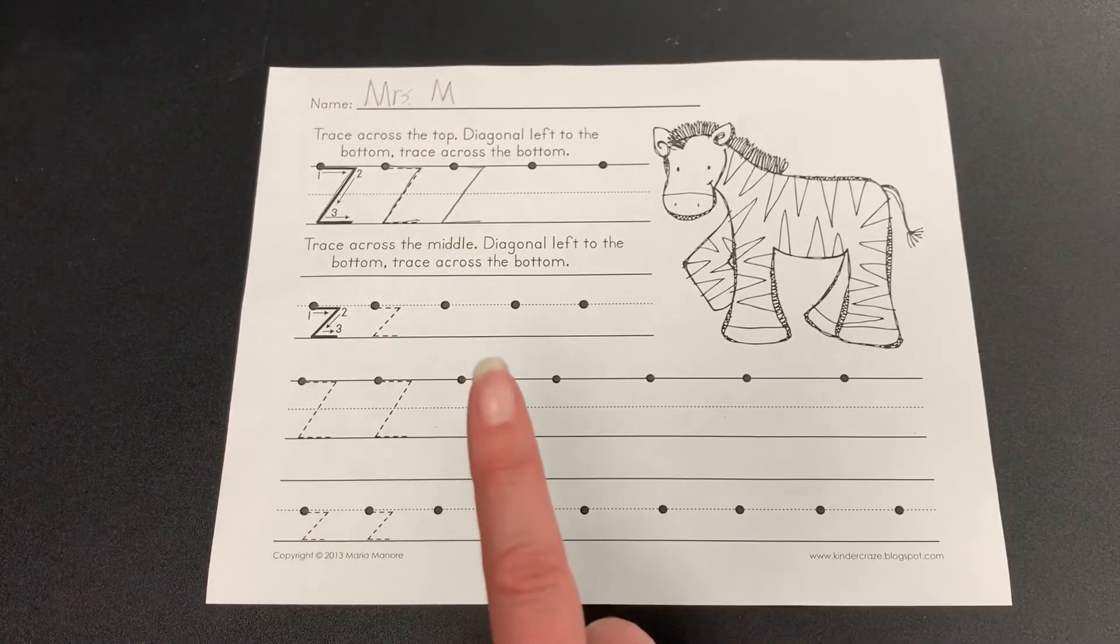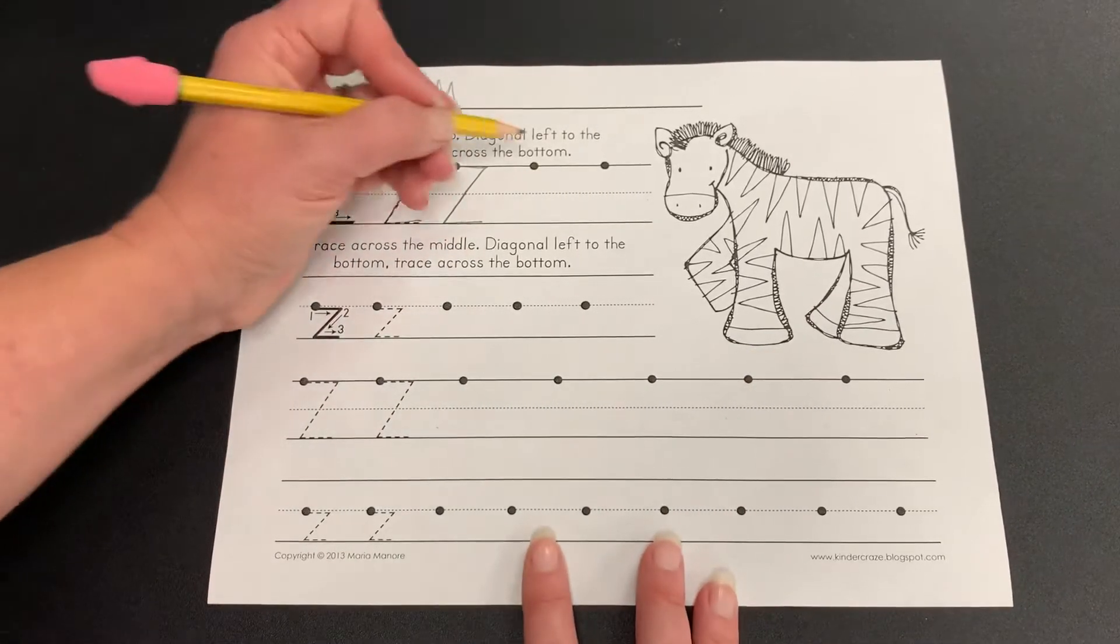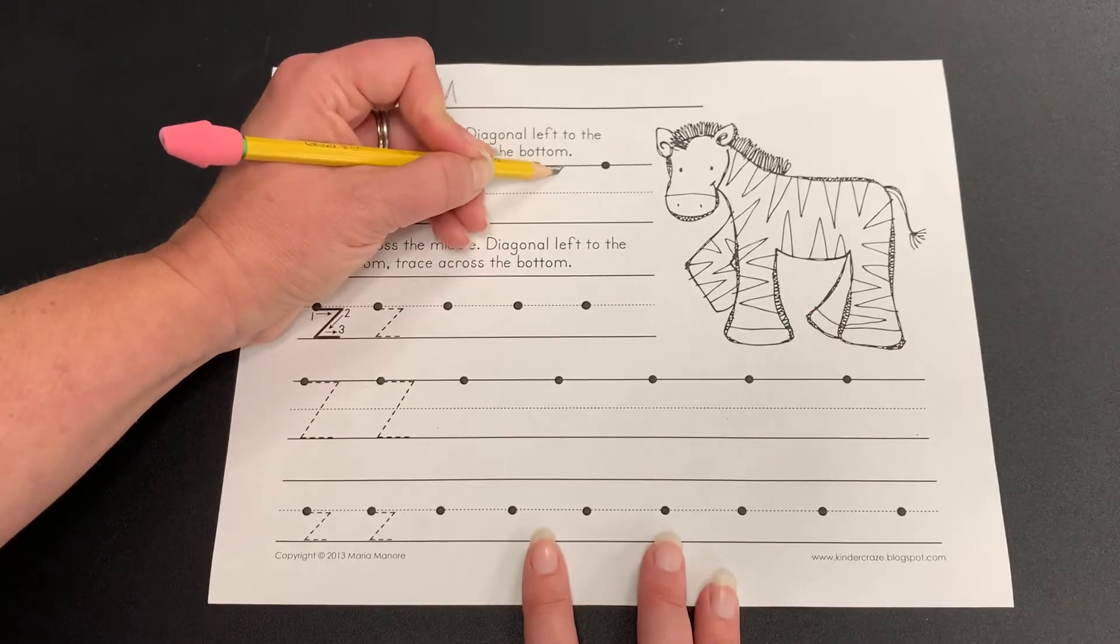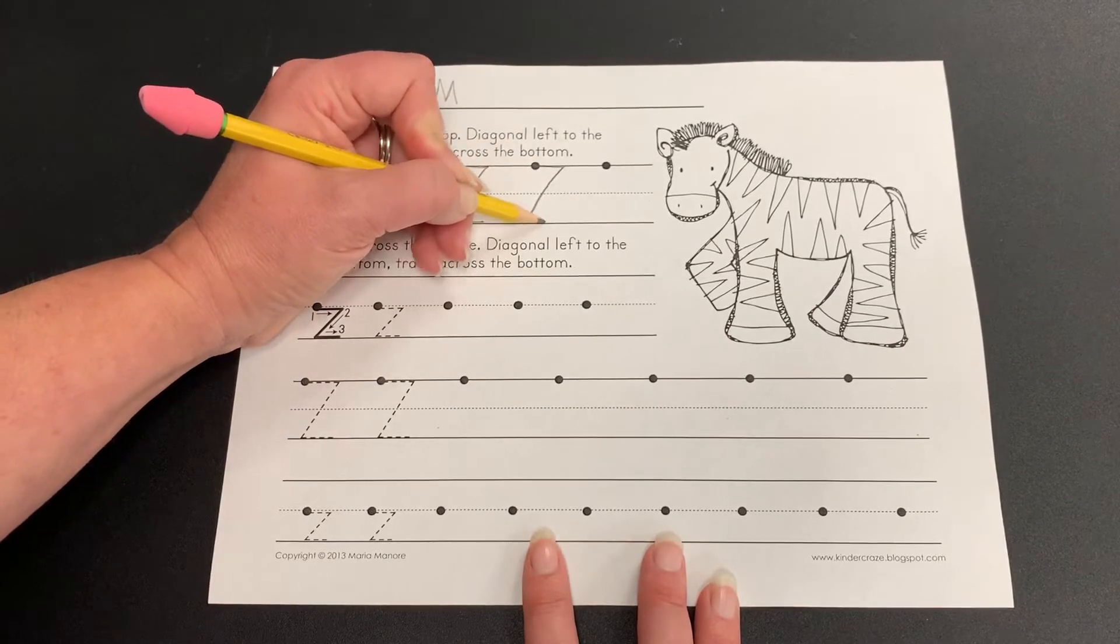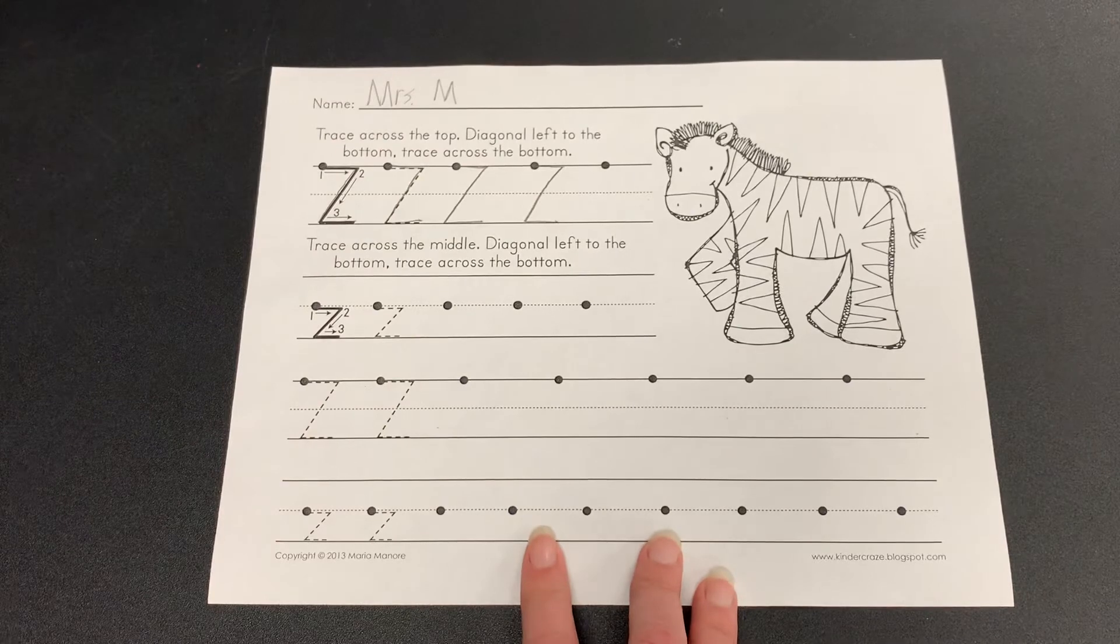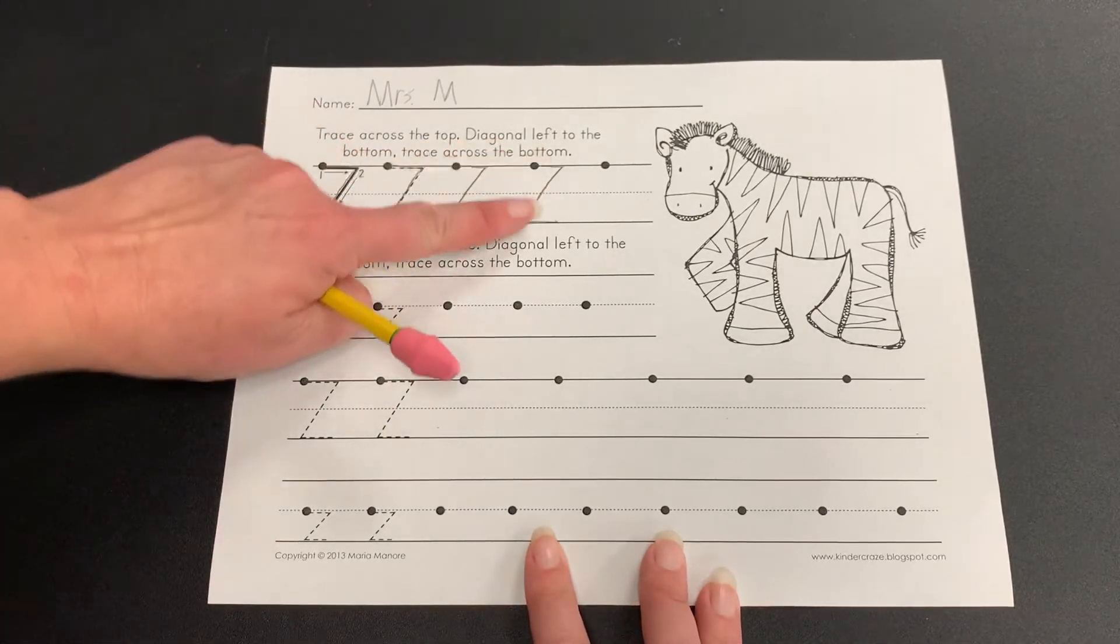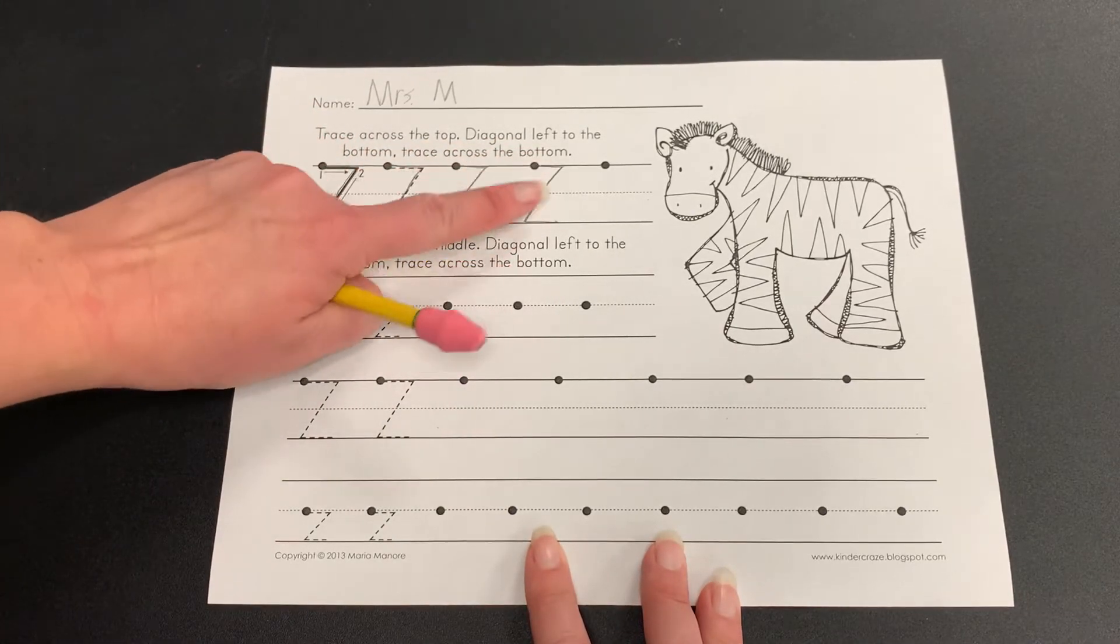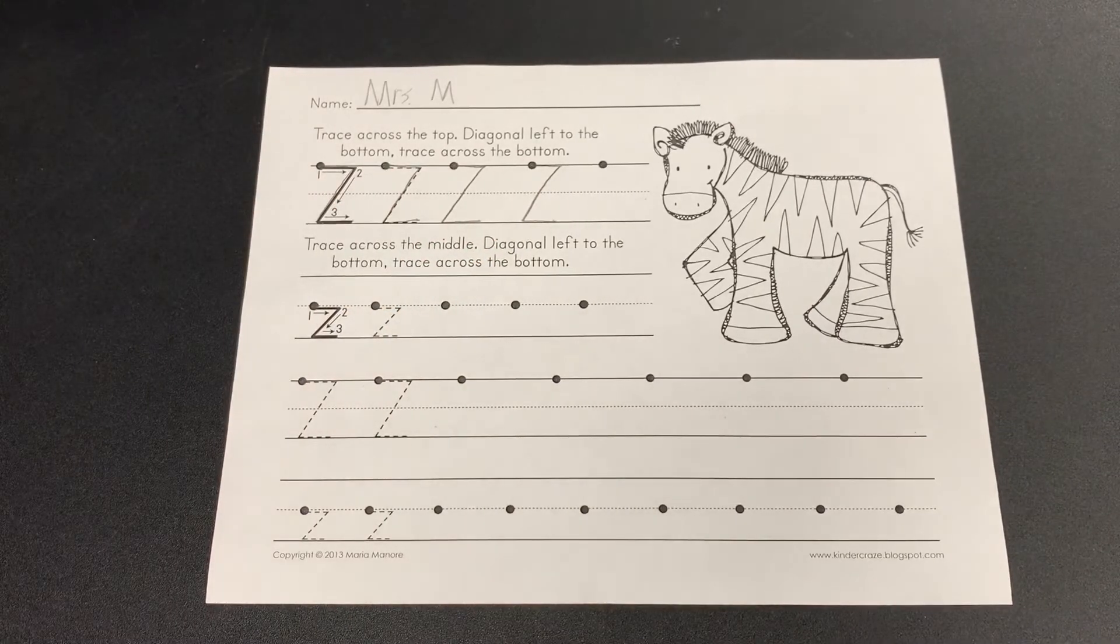Put your pencil up in the air and let's make some together. Ready? Straight, slanted, straight. Make sure that your letter Z is touching both the top line and the bottom line. That's for capital letter Z.